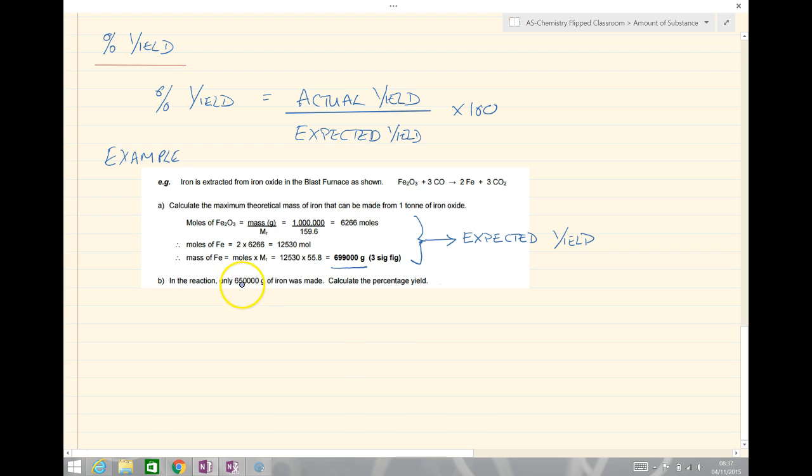When we actually do the reaction, we find we get 650,000 grams of iron. So this is our actual yield. This is actually how much we make. And so our percentage yield becomes equal to 650,000 grams over 699,000 grams times by 100. And if we plug that into our calculator, we get the answer of 93% yield.